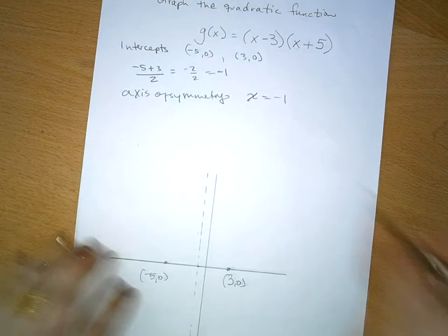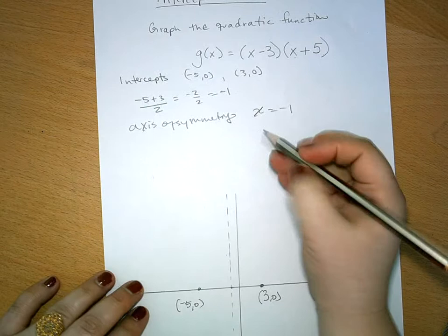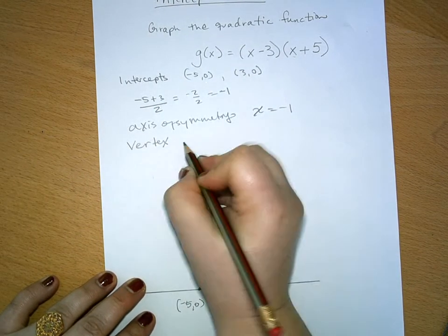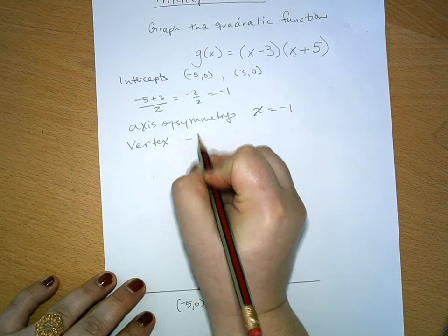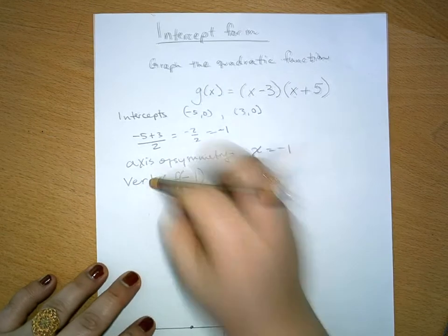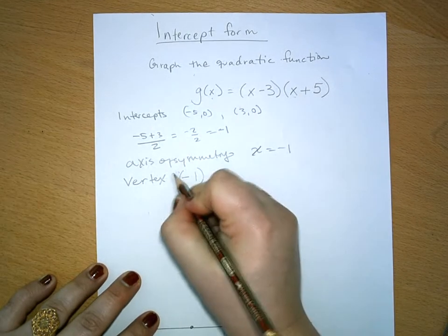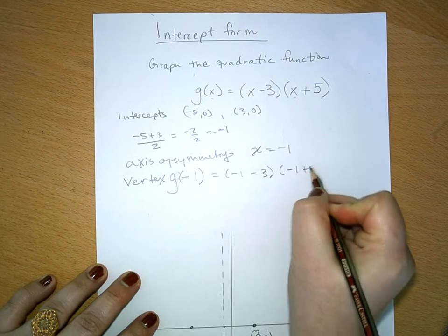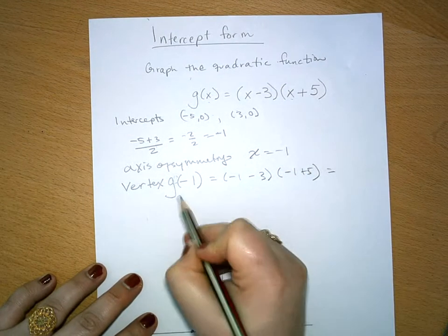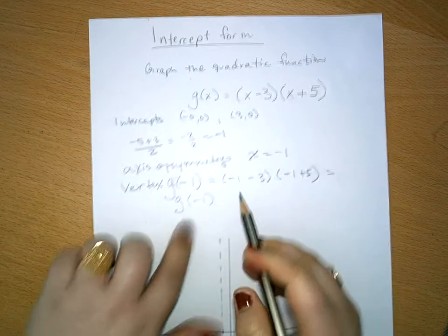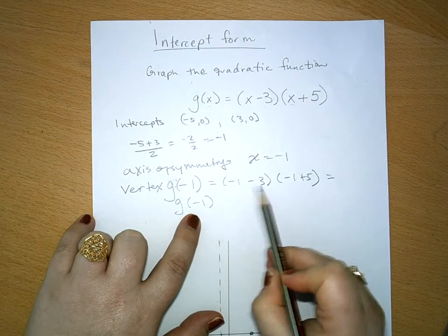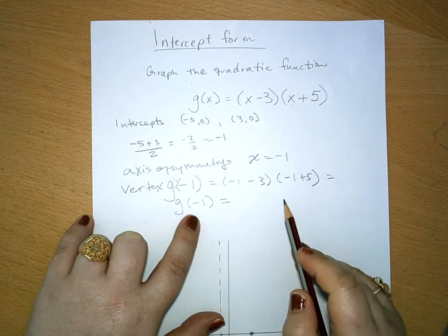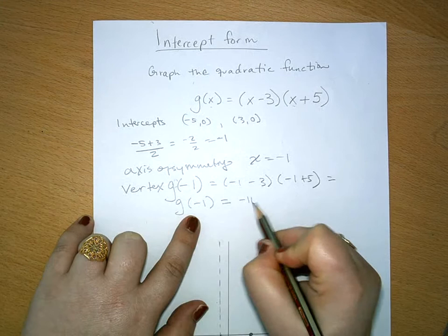We also know that our vertex is going to be somewhere on this line. And so we choose that the input of the vertex is going to be negative 1. And we want to find out what that is equal to by substituting it into our equation. And so, the output of negative 1 is going to be negative 4 times 4, which is negative 16.